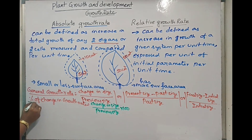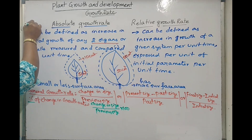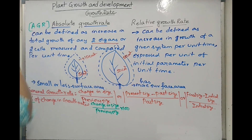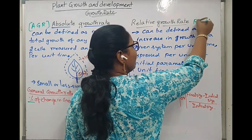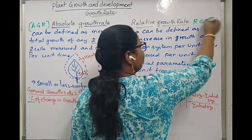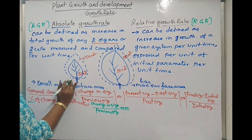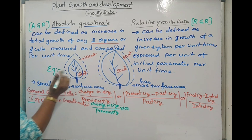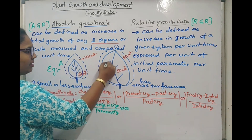So we will get the percentage. Absolute growth rate is also indicated in shortcut as AGR, written in capitals. In the same way, relative growth rate is abbreviated as RGR. These are the examples given according to NCERT. So this is leaf A and this is leaf B.